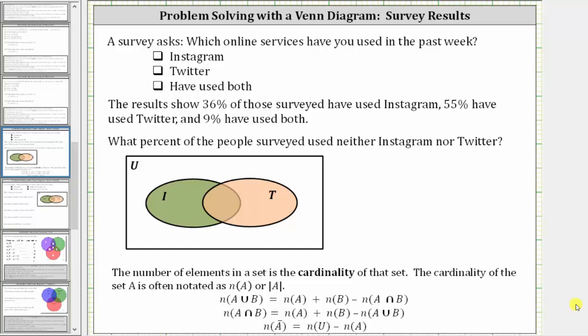A survey asks which online services have you used in the past week? The choices are Instagram, Twitter, and have used both. The results show 36% of those surveyed have used Instagram, 55% have used Twitter, and 9% have used both.